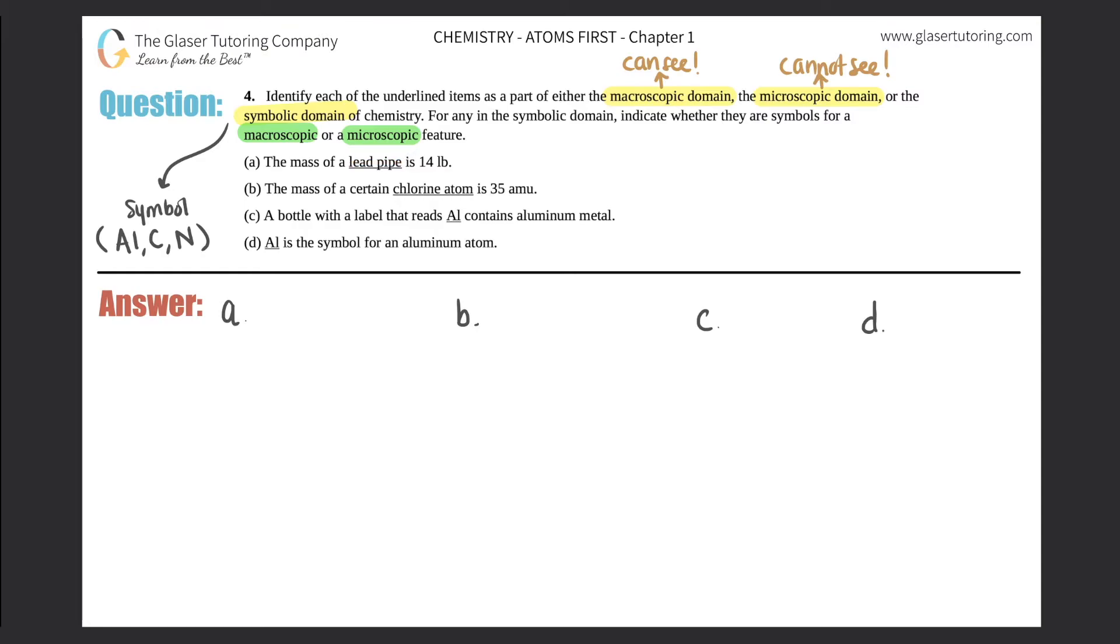For letter a, the mass of a lead pipe is 14 pounds. So I see lead. This is not a symbol because it didn't say what the symbol for lead was. By the way, lead is Pb. So if they said a mass of a Pb pipe, it would be in the symbolic domain, but since it didn't and it just said the word lead, it's one of the macroscopic or the microscopic.